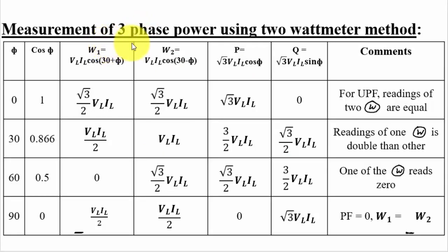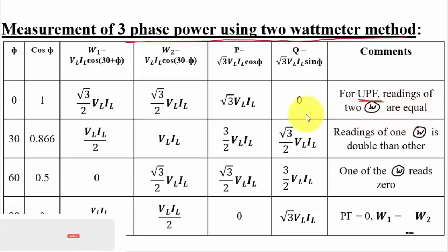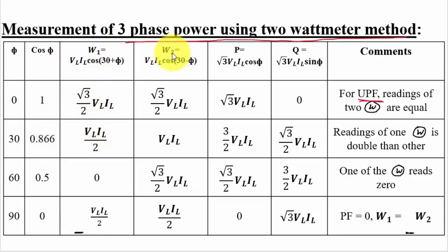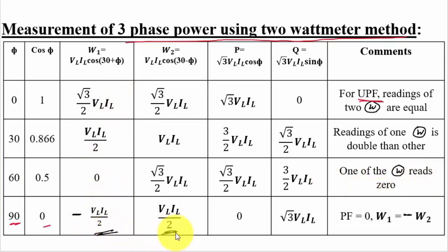For three-phase power measurement using the two-wattmeter method: when φ = 0° (power factor = 1, unity), both wattmeters read (√3/2) × VL × IL — readings are equal. When φ = 30° (power factor = 0.866), one wattmeter reads double the other. When φ = 60° (power factor = 0.5), one wattmeter reads zero. When φ = 90° (power factor = 0), both wattmeters read equal magnitude but with opposite signs — one positive, one negative.